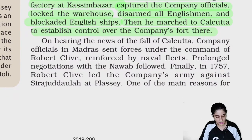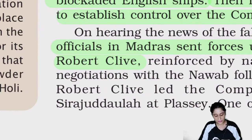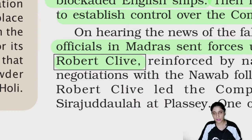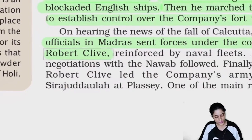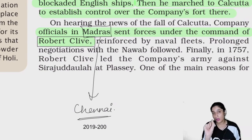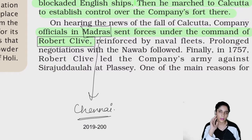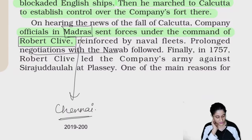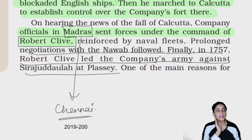On hearing the news of the fall of Calcutta, company officials in Madras — present-day Chennai — sent forces under the command of Robert Clive. In 1757, Robert Clive led the company's army against Sirajodolla at Plassey. Eventually, at the end, they went to war at Plassey.